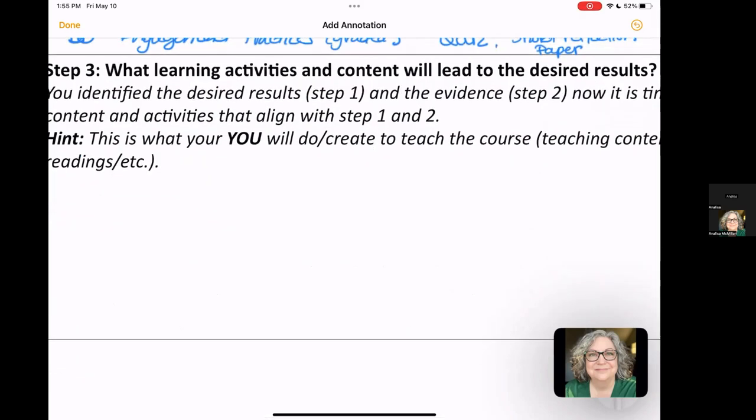Next is step three. And this is what learning activities and content will lead to the desired results. So, you've identified the desired results in step one. Those are your goals, the things you want your students to do once they are done with the course and you are no longer there to support them. And the evidence, those are the assignments you're going to create.